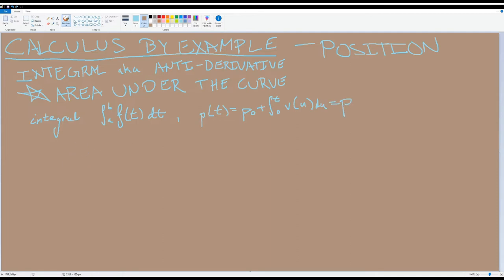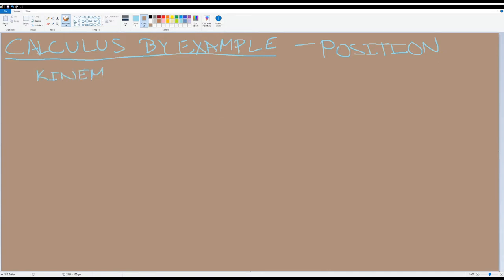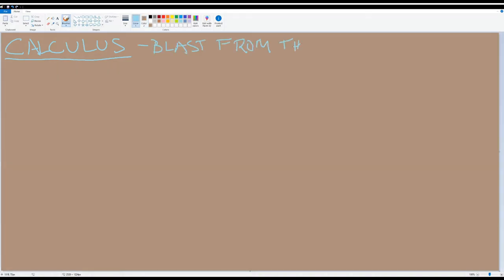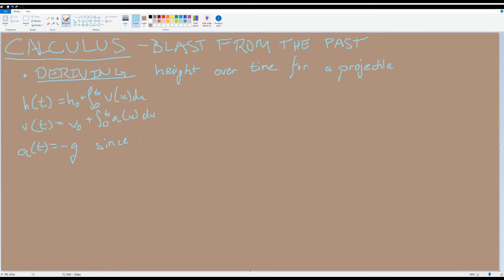But of course, the opposite is true as well. We can take the derivative of an integral to get the original function f. And using integrals, we can once again rewrite the kinematic equations of motion. We find that position at time t is the initial position plus the integral of velocity from zero to t. And velocity at time t is the initial velocity plus the integral of acceleration from zero to time t. Now using calculus, we can in fact derive the position of the height of a projectile over time that we used in the algebra episode.